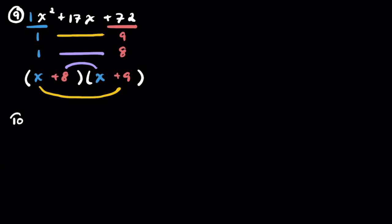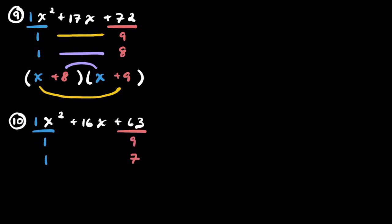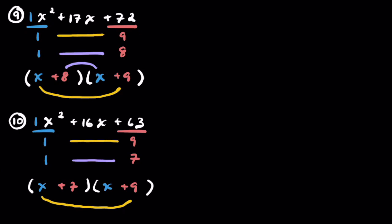Problem 10: x squared plus 16x plus 63. Leading coefficient of 1, and for 63 we have options: 1 and 63, 3 and 21, 9 and 7. Nine and 7 make the most sense — they add to get 16. Filling in the four spots: x and x, plus 9 and plus 7. Outers and inners pair correctly. That's our first 10 problems — in all of them, everything was positive.